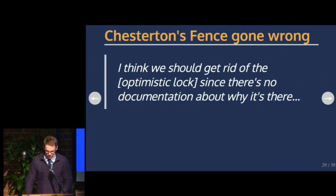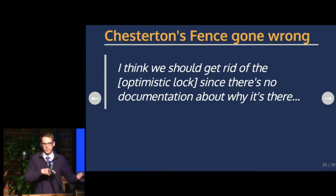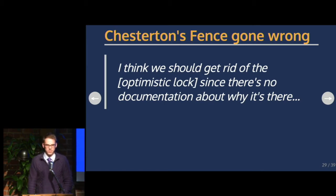It didn't really seem like there was a pattern other than how rigorous the original library author was willing to be at that particular place in the codebase. There was also a great Chesterton fence example: a GitHub issue where they had an optimistic lock in place checking that an object hadn't been updated since the last time you read it. It threw errors when someone else had updated the object, and someone complained they should get rid of it since there was no documentation about why it was there — which is the exact opposite of when you'd want to remove something.